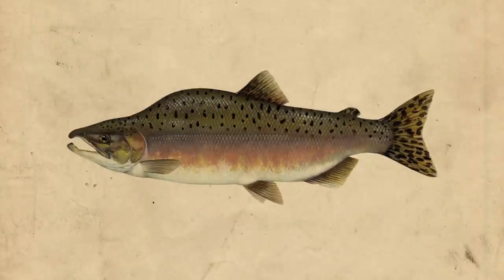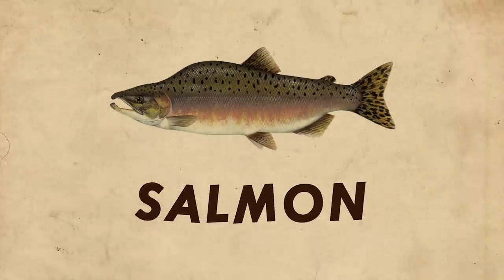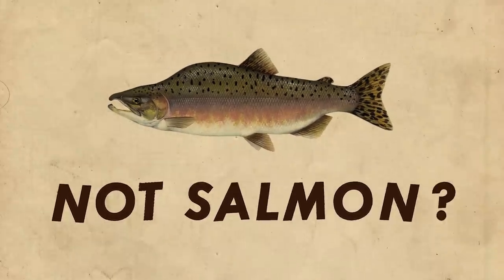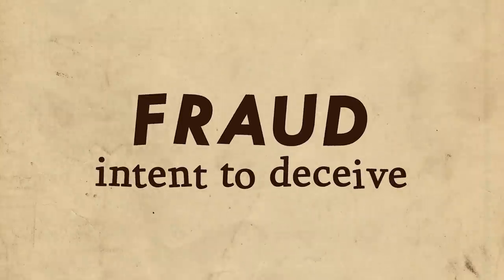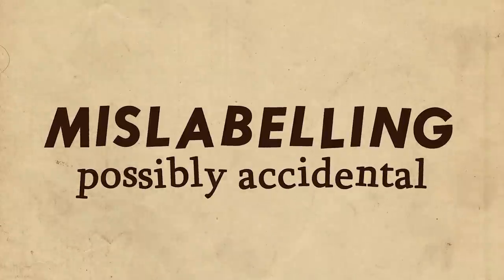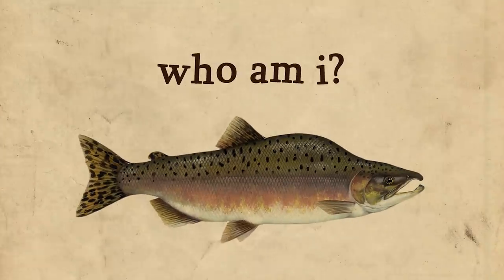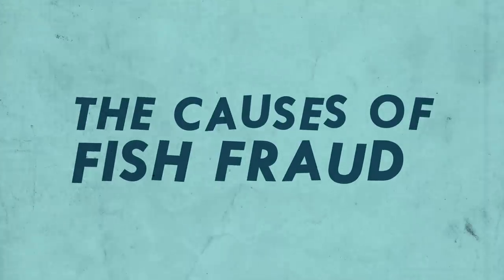Fish fraud is when someone calls a fish that is one thing by another name. This is different from mislabeling a fish. Fraud is the intent to deceive, and mislabeling can be accidental. Other than that, they are the exact same thing — your fish is not what your fish actually is. Now it is important to distinguish the two, because the intent changes the cause, which changes the cure. Fish fraud is caused in two ways.